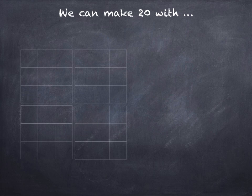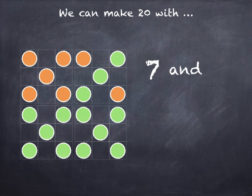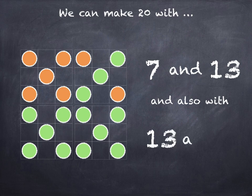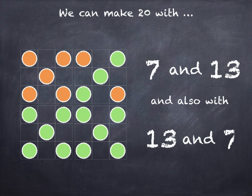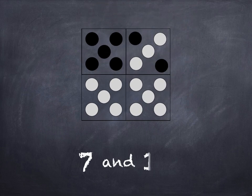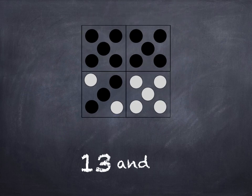We can make 20 with 7 and 13, and also with 13 and 7.